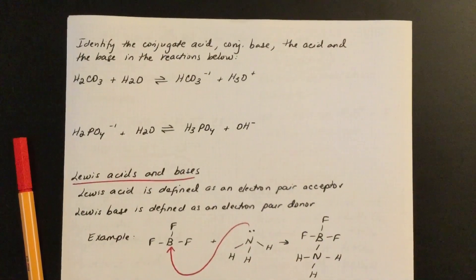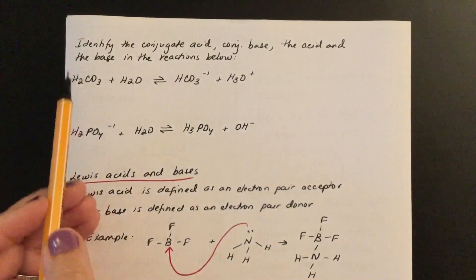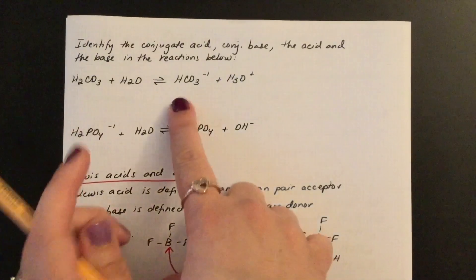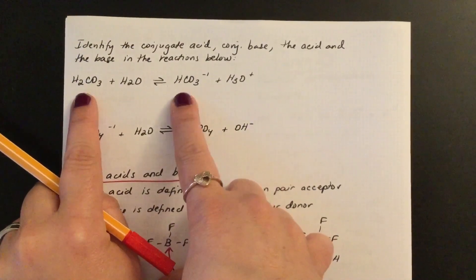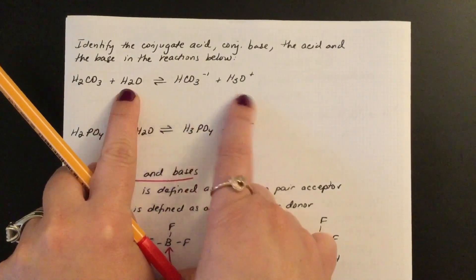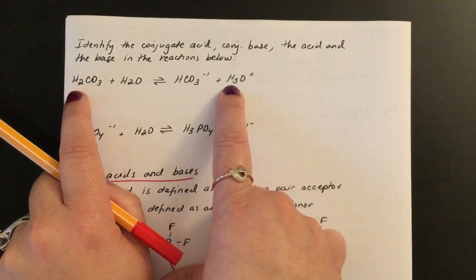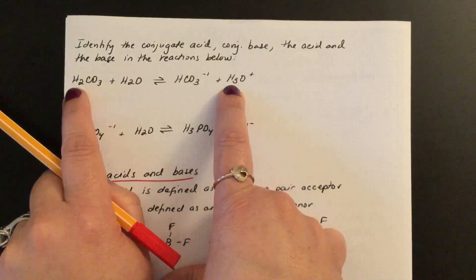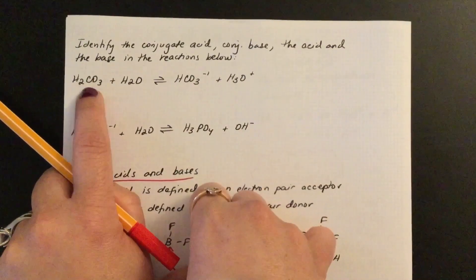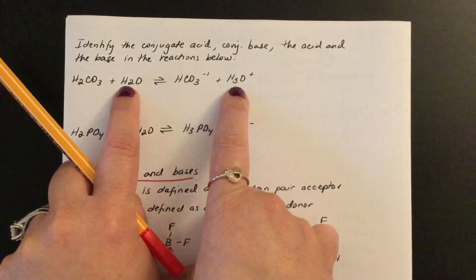Now I have two examples. Looking at the first reaction, compare the reactants and products. H₂CO₃ has two protons and on the product side it has only one — the number of protons is decreasing. Meanwhile, the water molecule goes from H₂O to H₃O⁺, gaining a proton. So H₂CO₃ is donating a proton to the water, which is why H₂ becomes H₃.